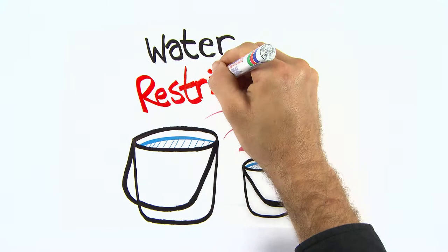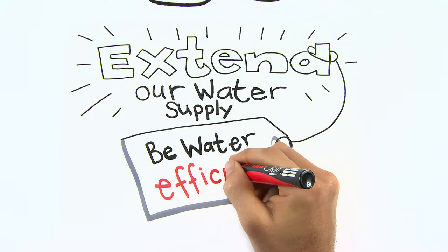The best option is to extend our water supply by being more water efficient. This will help build Darwin as one of Australia's strong, sustainable cities. Living Water Smart, part of Darwin's future.